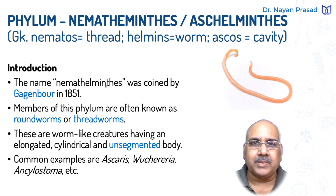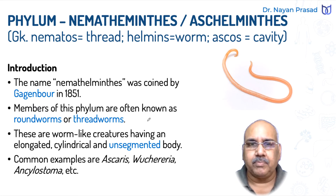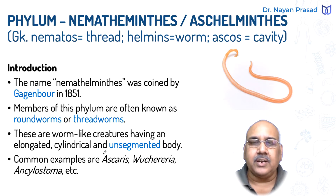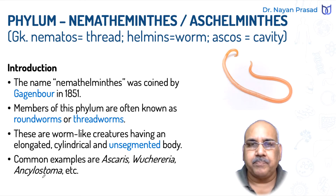The name Nemathelminths was coined by Gaggenbauer in 1851 AD. Members of this phylum are often called roundworms or threadworms. These are worm-like creatures having an elongated, cylindrical and unsegmented body. Common examples of Phylum Nemathelminths are Ascaris, Wuchereria, Ancylostoma, etc. Let us see their diagrams.